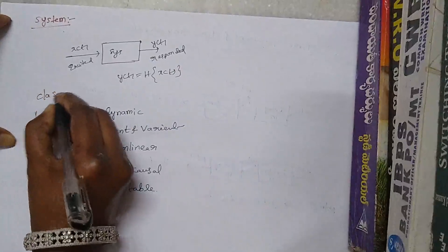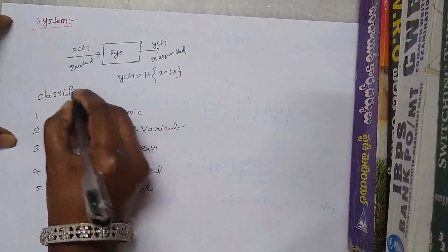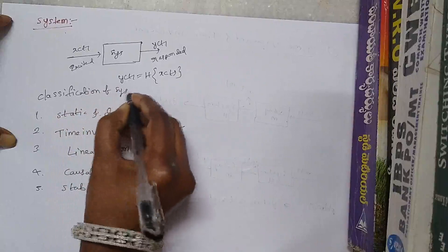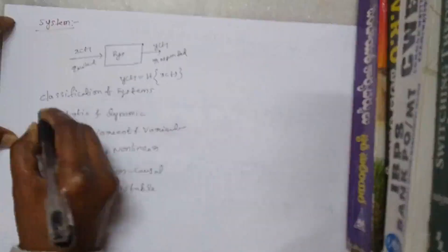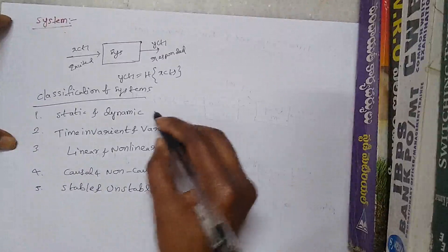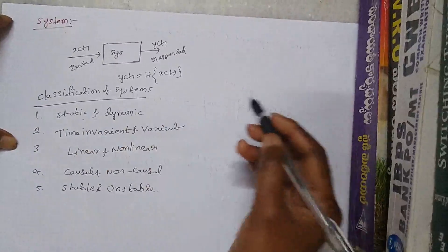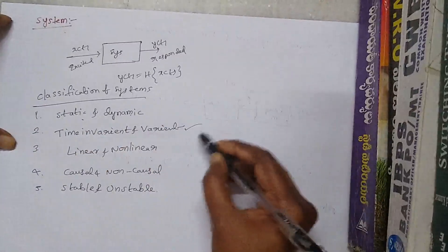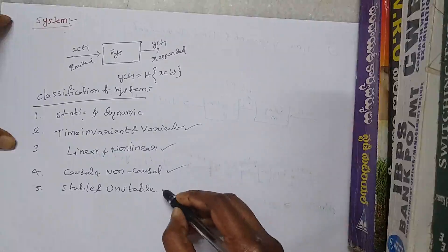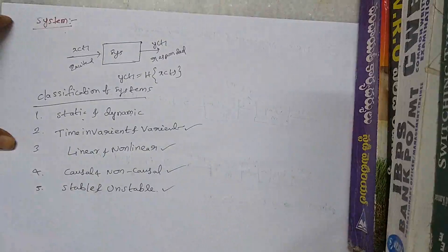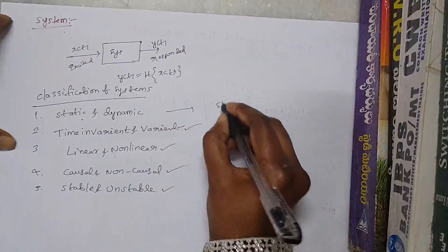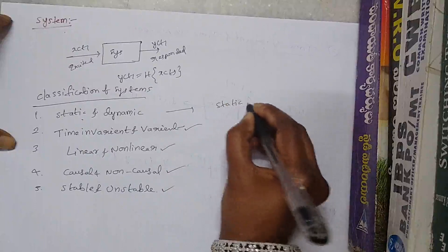Classification of systems. Systems can be classified in five ways: static and dynamic systems, time invariant and time variant, linear and non-linear systems, causal and non-causal, and stable and unstable systems. Static systems are memoryless.